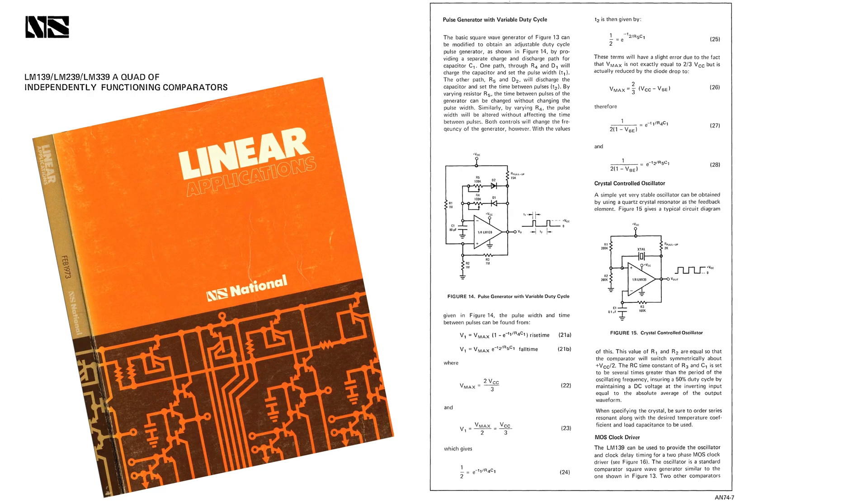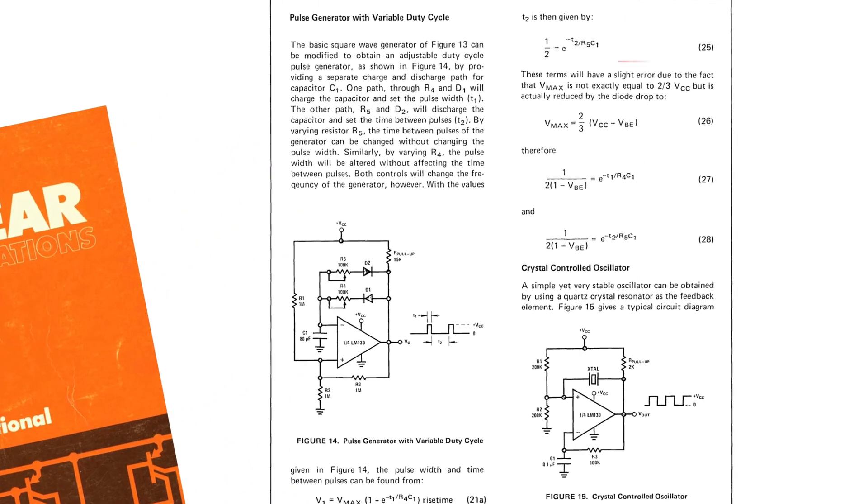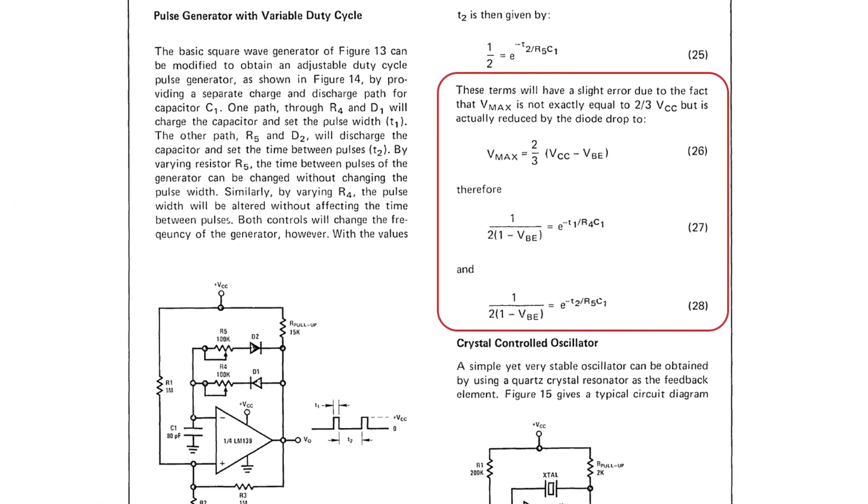The first time I saw this circuit was in the 1973 National Linear Applications Manual in AppNote 74. The LM139 is a quad of independently functioning comparators. The AppNote included many ways to use a voltage comparator, but the end equations for the pulse generator for variable duty cycle were clearly wrong. It talks about taking into account the diode drops, but then the equations have VBE, like they might be using an emitter base junction of a transistor instead of a diode.